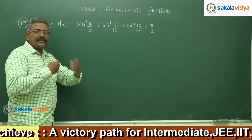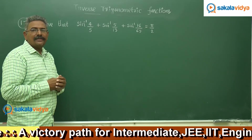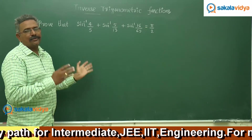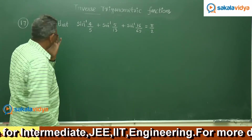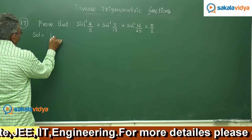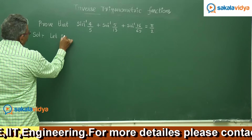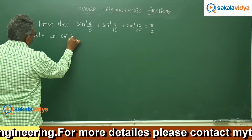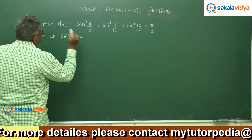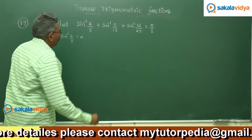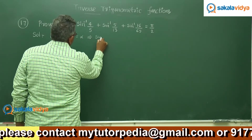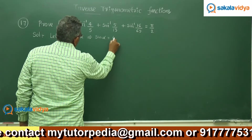This can be restated: cos of alpha plus beta equals 16/65. Then this problem can be solved very easily. Now let sin inverse 4/5 equal to alpha. Then sin alpha equals 4/5.